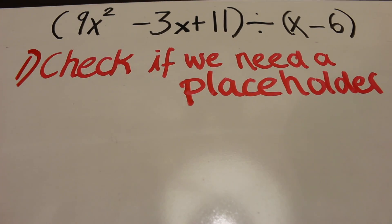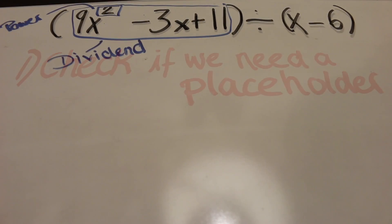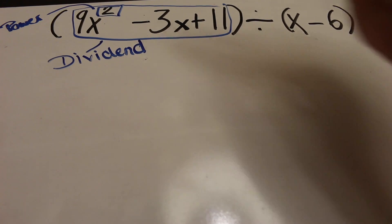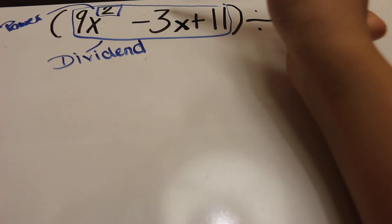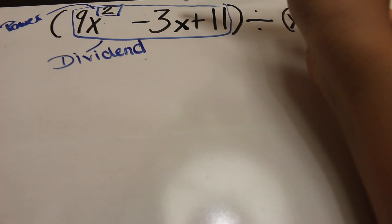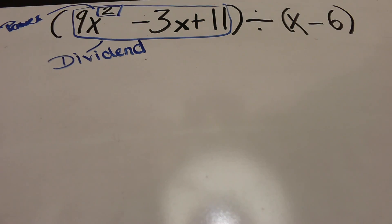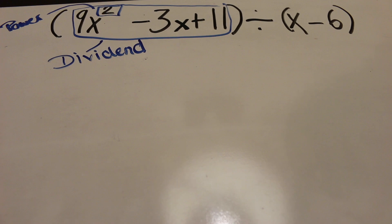When we want to use synthetic division, we do exactly what we do with long division. We first check if we need a placeholder. The highest power of the dividend is 2, then 1, then 0. Is everything in order or am I missing a power? No, so I do not need a placeholder.